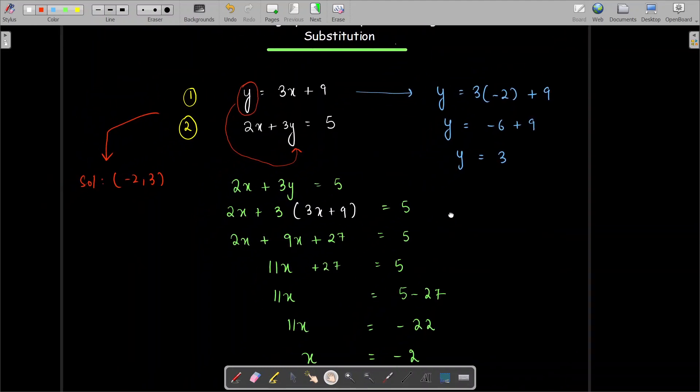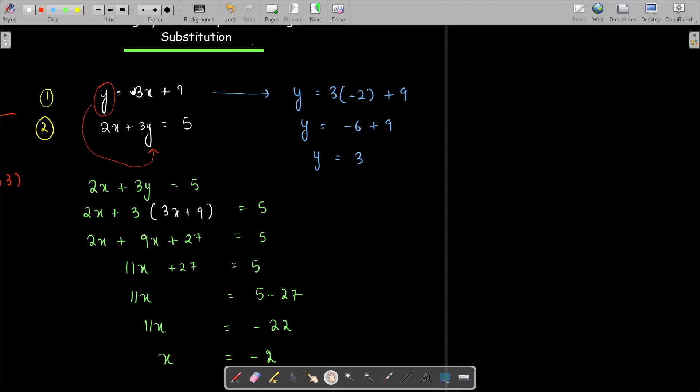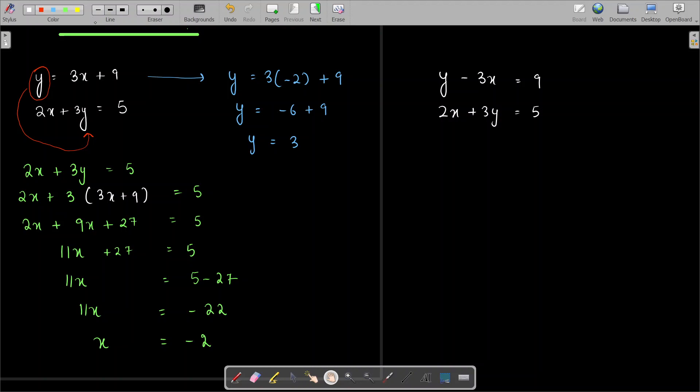Now as I said, substitution will work best only in this case. But if you do not have a system of equations like this, for example you could have Y minus 3X equals 9 and 2X plus 3Y equals 5, you could have something like this.